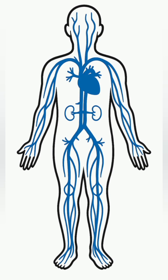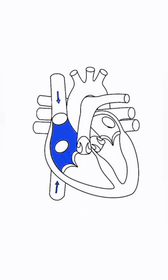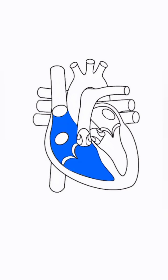Deoxygenated blood from the body returns through the superior vena cava and the inferior vena cava to the right atrium. It flows through the tricuspid valve into the right ventricle. At this point, both chambers carry deoxygenated blood.